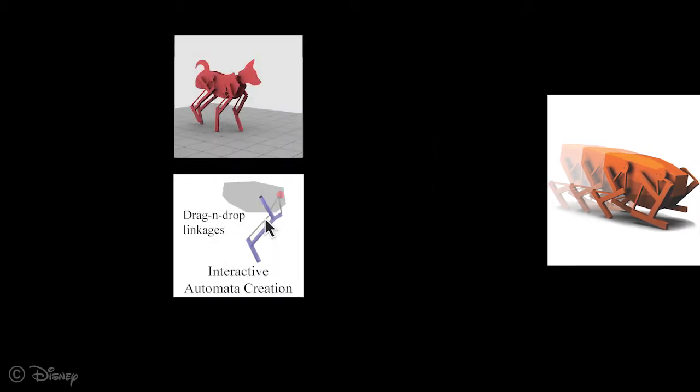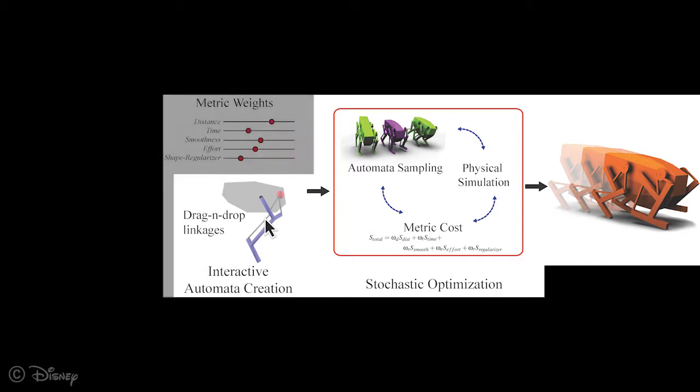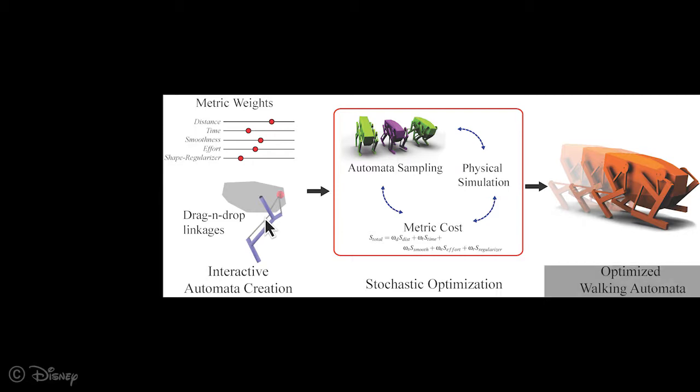Given an initial design by a user, which due to the complexity of the task is unlikely to be successful at walking, we perform physical simulation within optimization using a simple energy term constructed from intuitive metrics. This produces an optimized version of the automata.